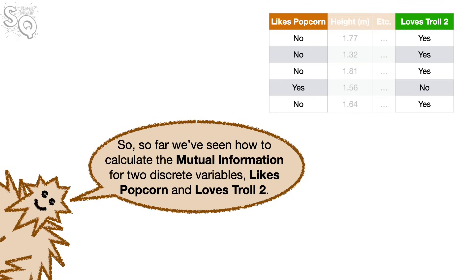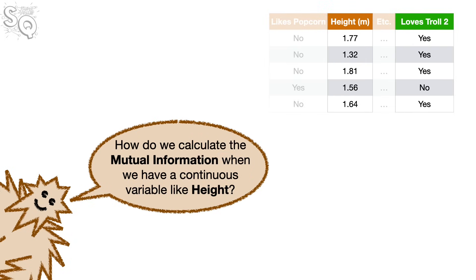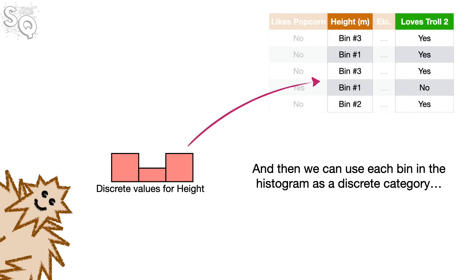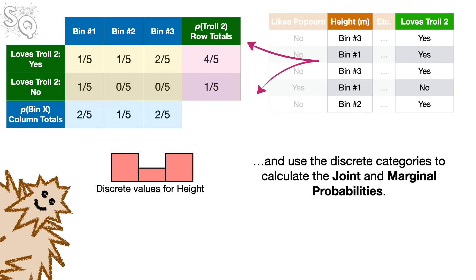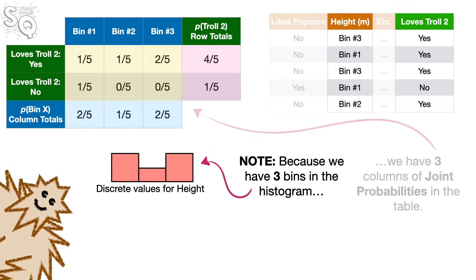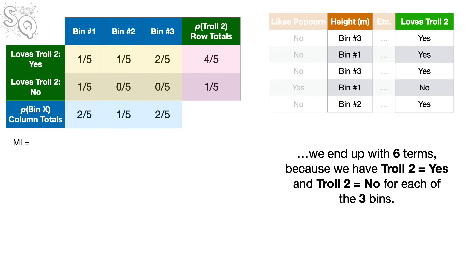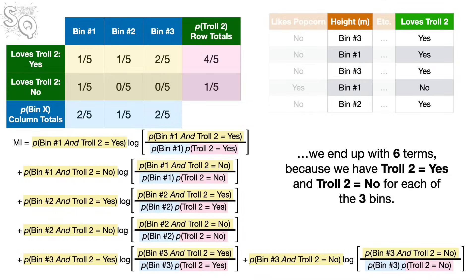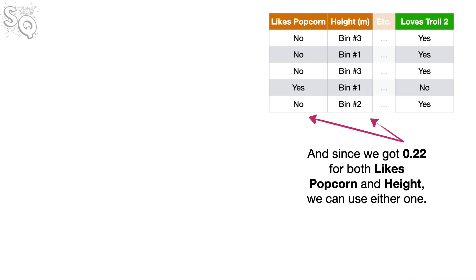So far we've seen how to calculate mutual information for two discrete variables — likes popcorn and loves Troll 2. How do we calculate it when we have a continuous variable like height? When one or more variables are continuous, we simply create a histogram of the continuous values and use each bin as a discrete category to calculate the joint and marginal probabilities. Because we have three bins in the histogram, we have three columns of joint probabilities in the table and six terms in the expanded equation. When we do the math, we get 0.22 for height as well.